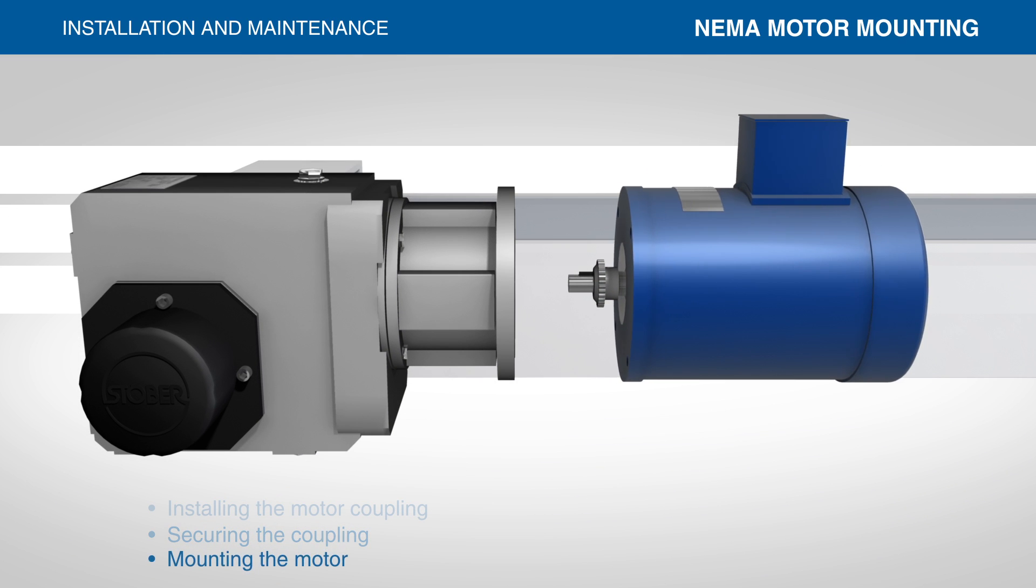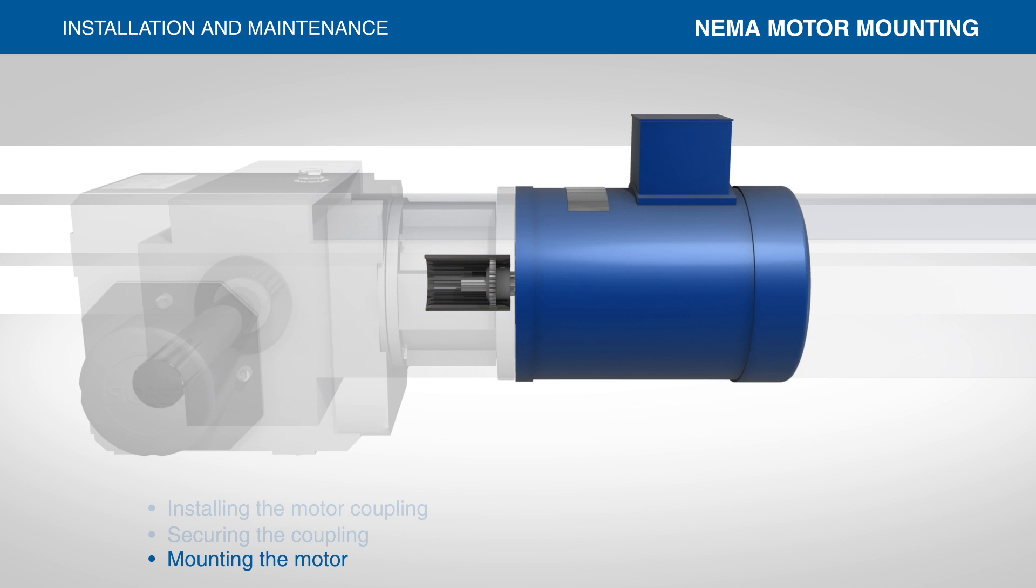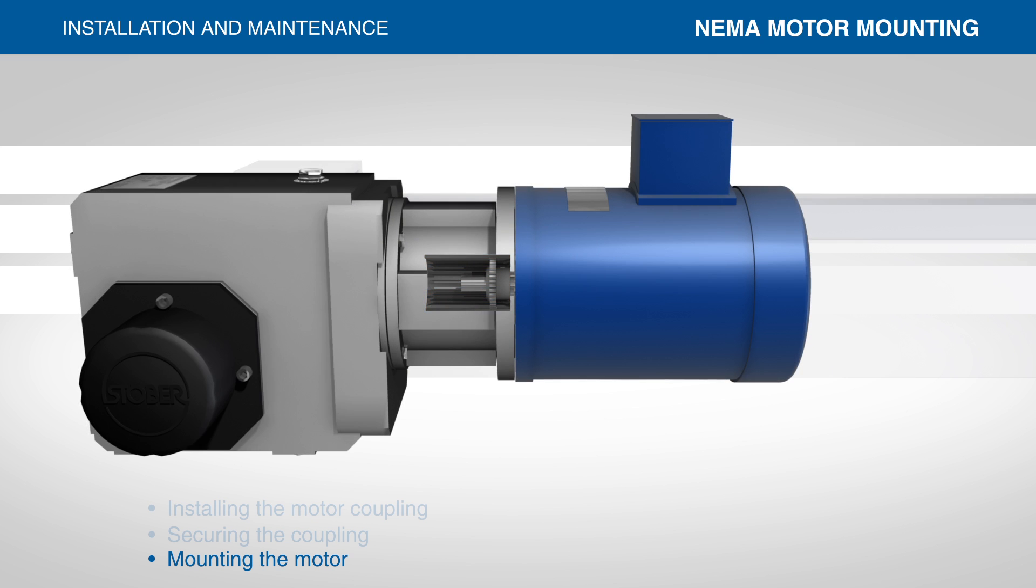With the coupling secure, insert the motor shaft into the motor adapter. The coupling sleeve is already installed on the mating reducer coupling hub inside the motor adapter.